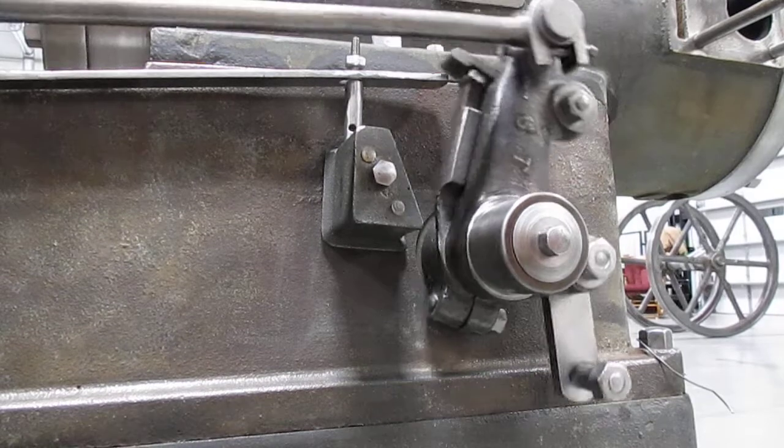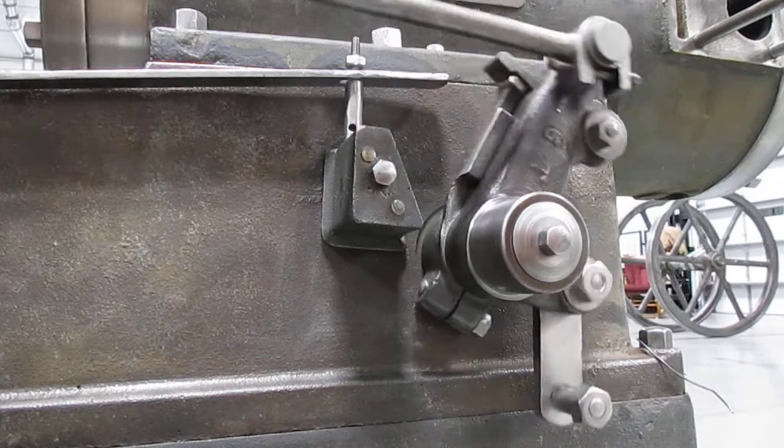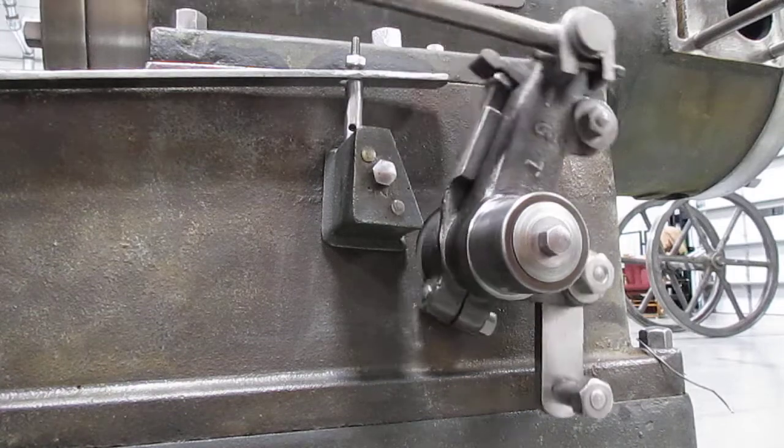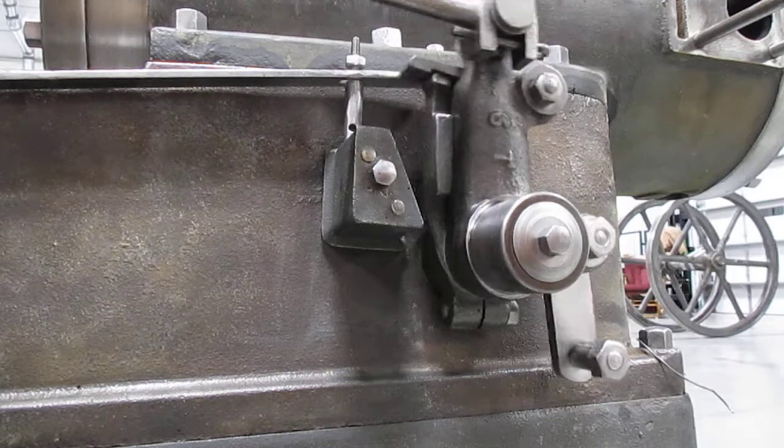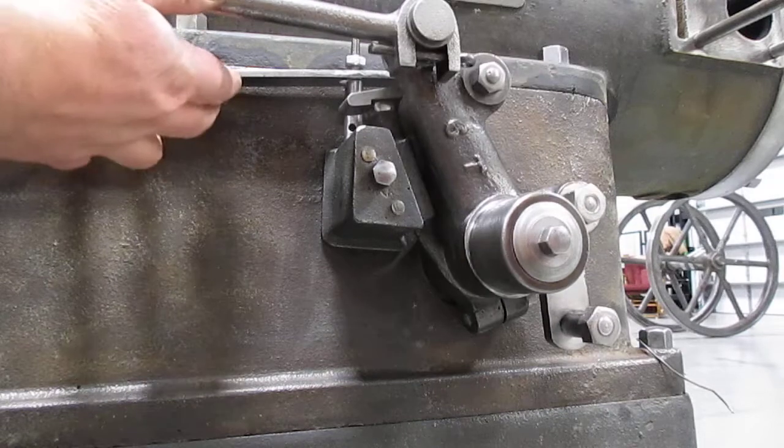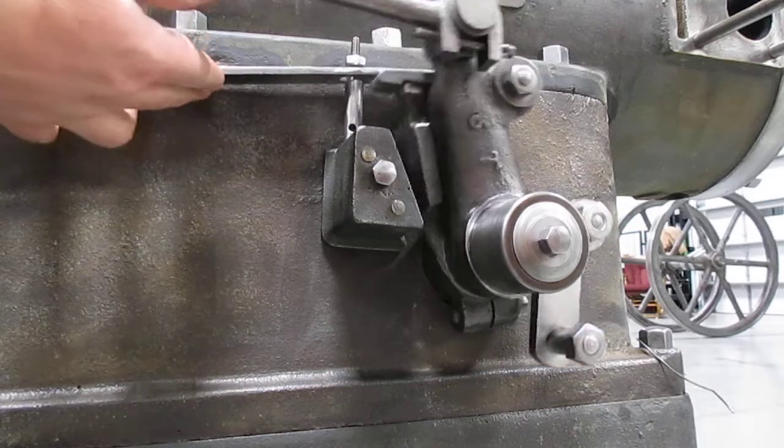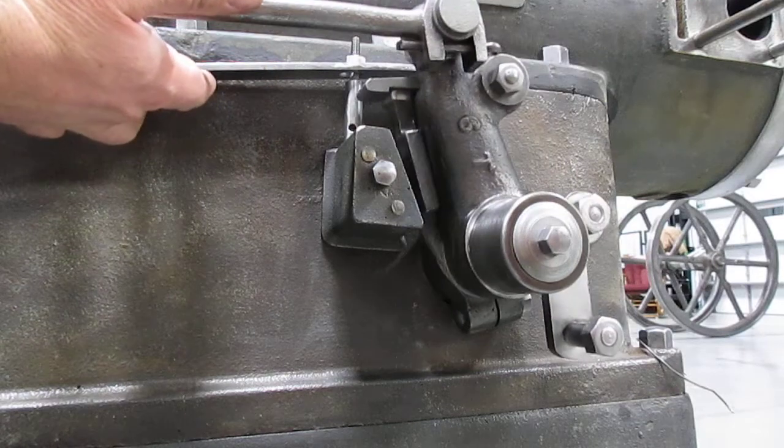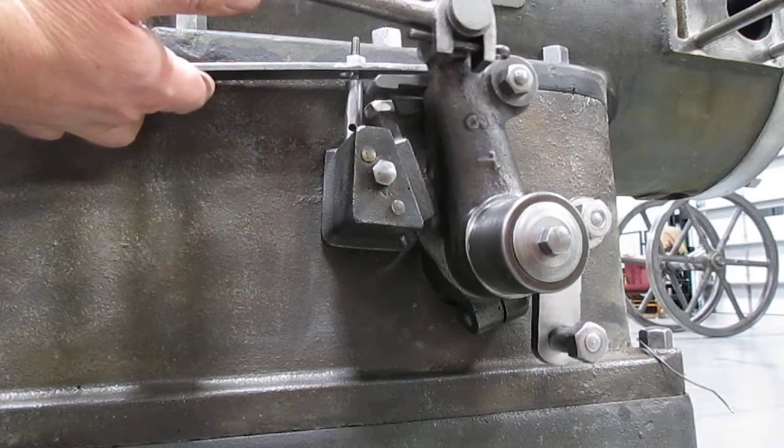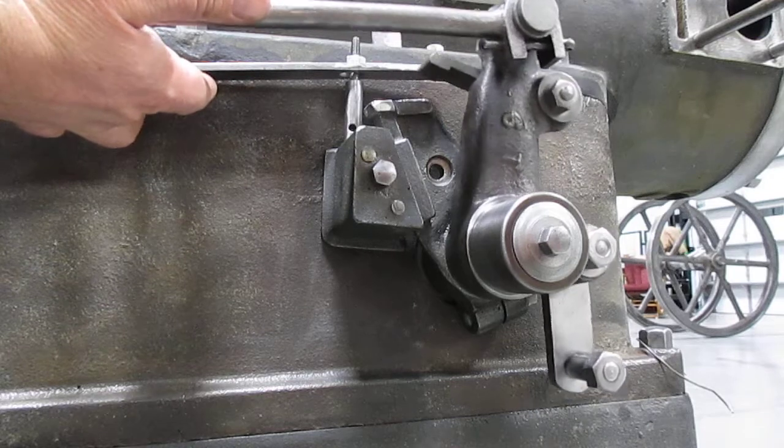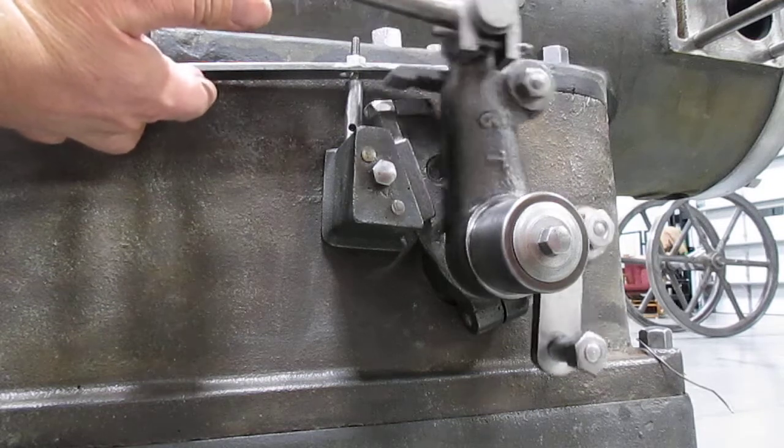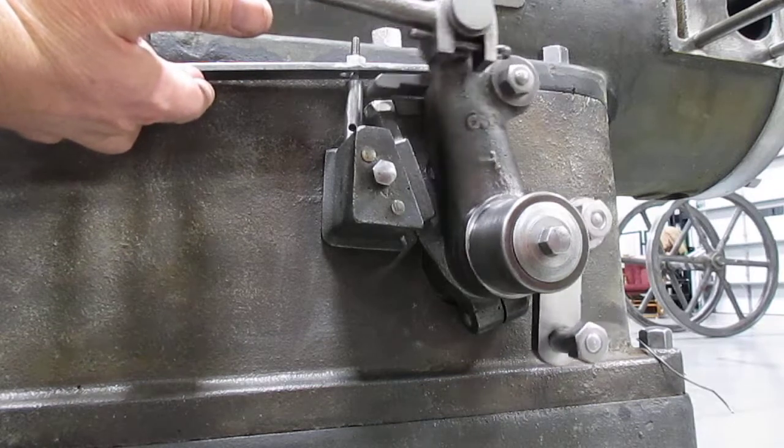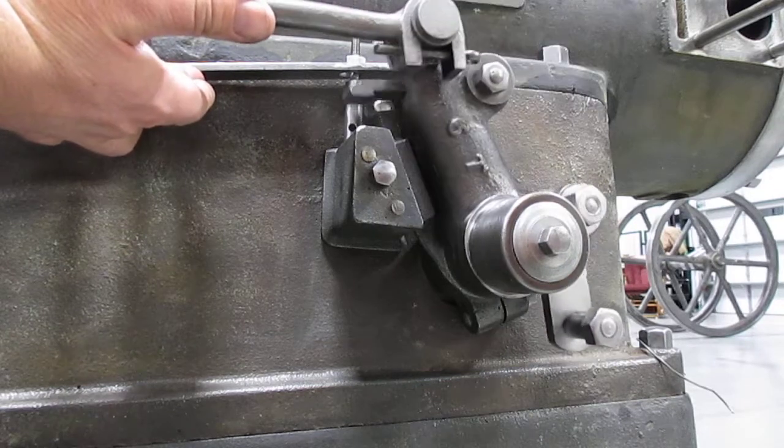You can see the lever moving back and forth there—that operates the exhaust valve on the other side of the engine. I'll show you that in a minute. When the governor lifts up, it unlatches right there and drops the lever. In this position, the exhaust valve would be held open and the intake valve held shut.